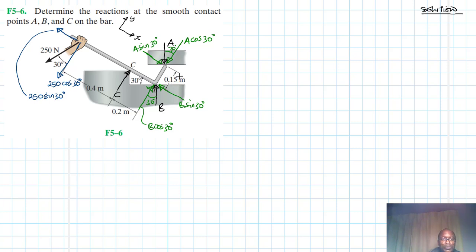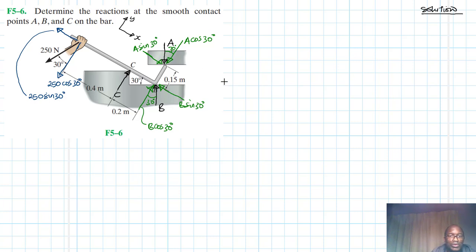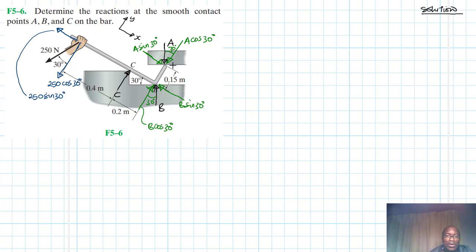This is enough information. We can now begin to take moments to find what we need. We are going to take moments about point B. We have three unknowns — A, B, and C — so we need three equations which we'll solve simultaneously. We'll take moments about point B, then moments about point A, and then the summation of forces in the X direction.